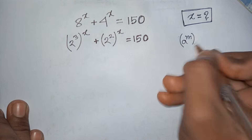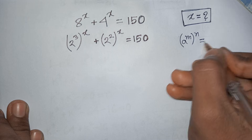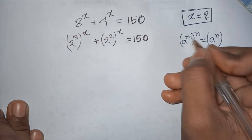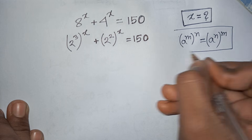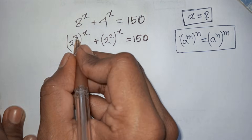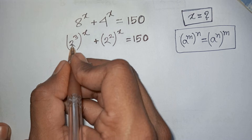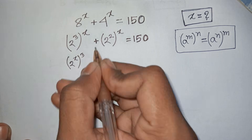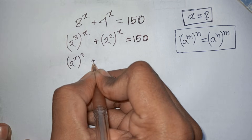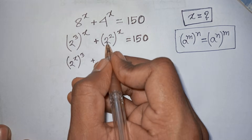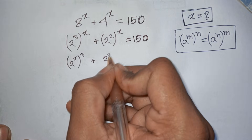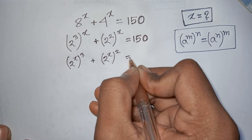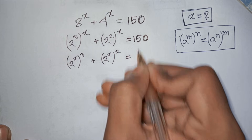Applying the rule a^m raised to power n equals a^n raised to power m: (2³)^x becomes (2^x)³, plus (2²)^x becomes (2^x)², is equal to 150.